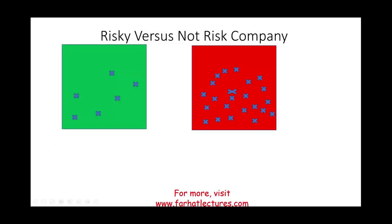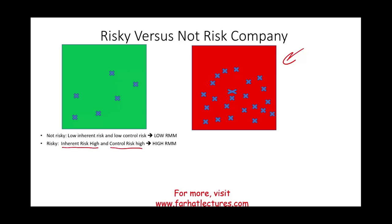Now let's take that analogy and superimpose it on two companies. One company we'll consider risky — meaning they have high inherent risk and high control risk, a high risk of material misstatement. We'll compare this to a company with low inherent risk and low control risk, which is a low risk of material misstatement. A risky company will have more mistakes — notice each X here is a mistake, and there are more mistakes in the risky company.